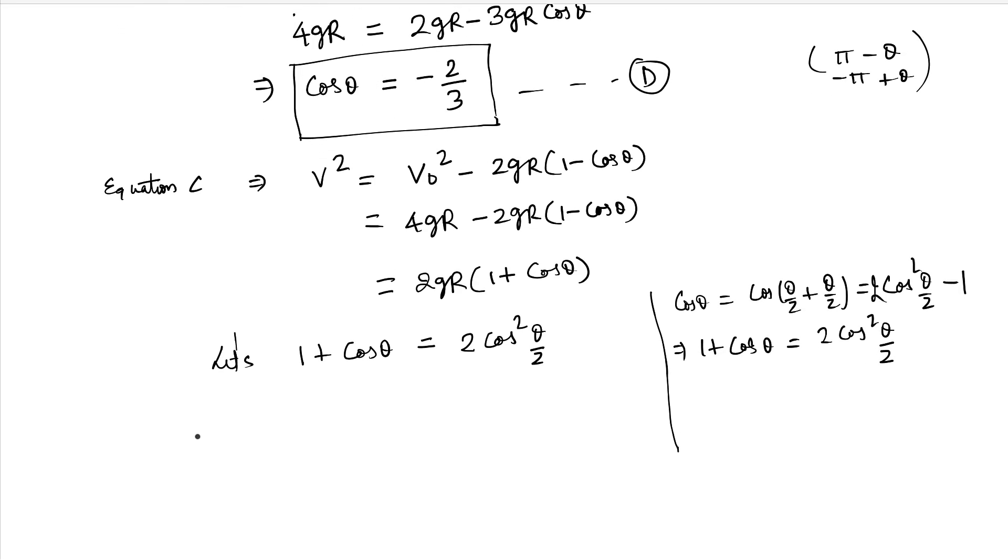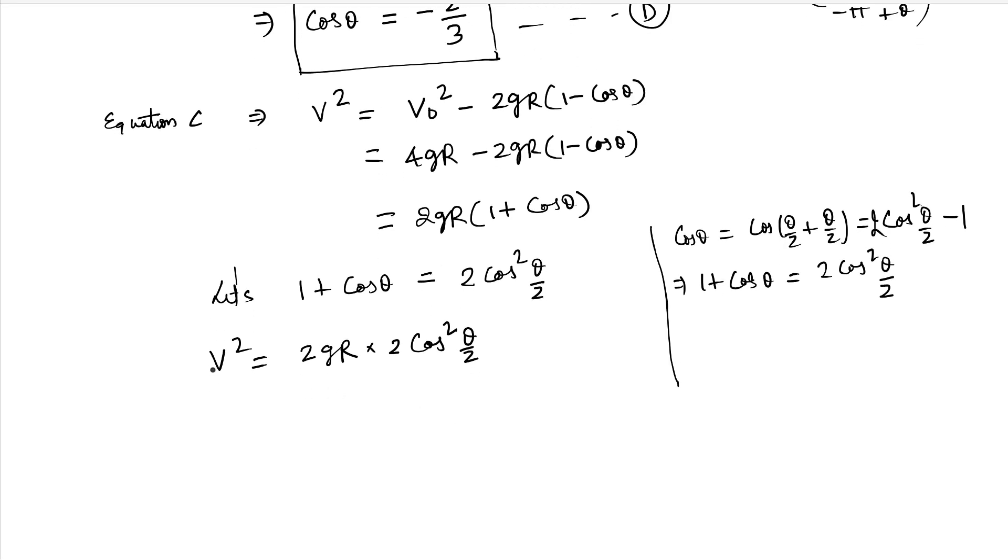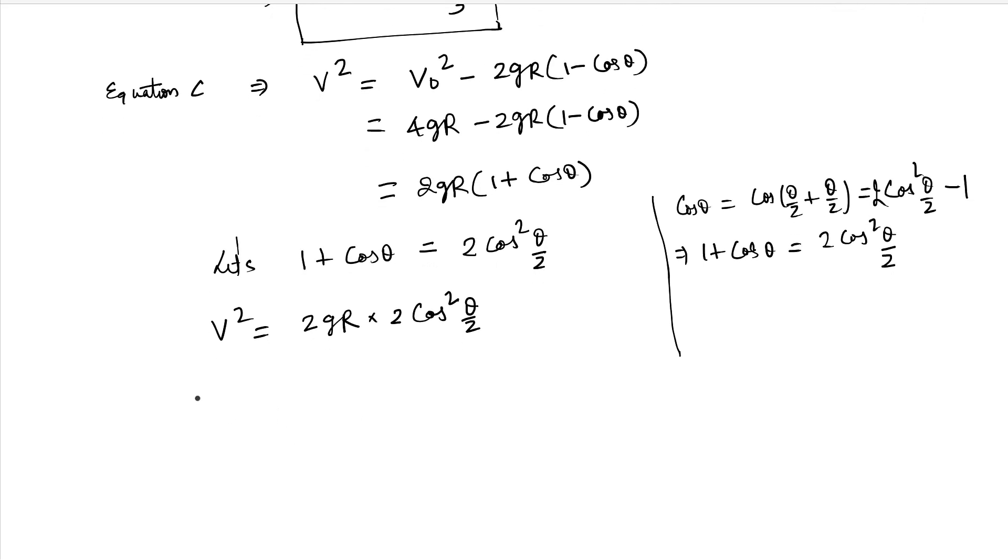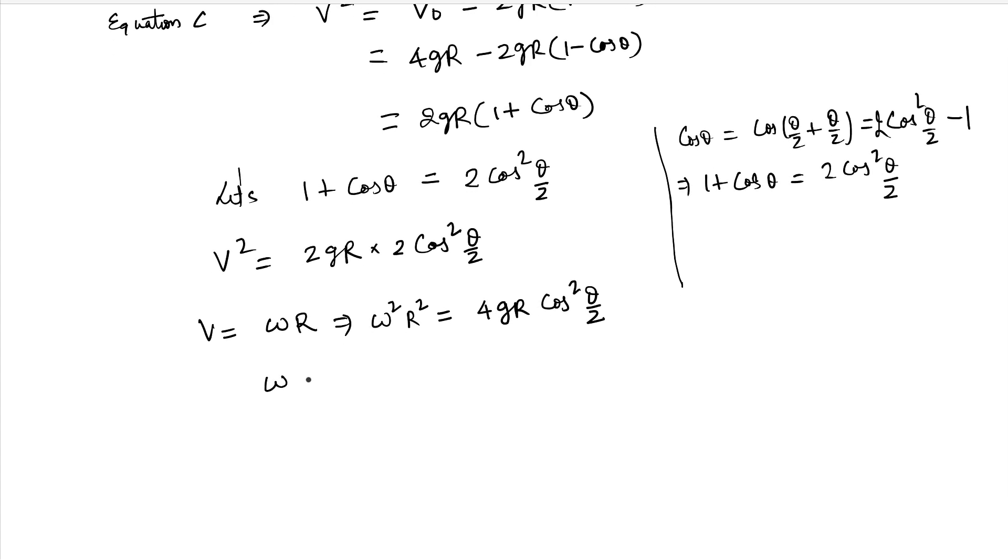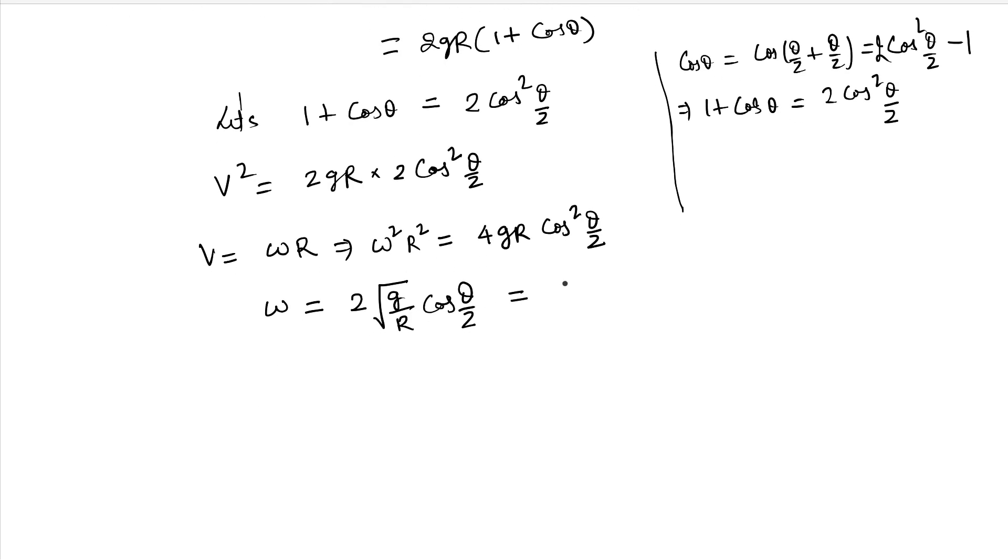So V square will be 2gr times 2 cos square(theta by 2). Since V has power 2, I wanted to convert cos theta into something which can be out of the root. And V is nothing but omega r. So that implies omega square r square equals 4gr cos square(theta by 2). Therefore omega is 2 square root of (g by r) cos(theta by 2). And omega is nothing but d theta by dt. So this is what I wanted to go to, because now I have dt.